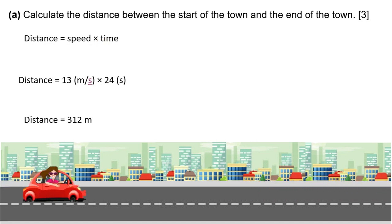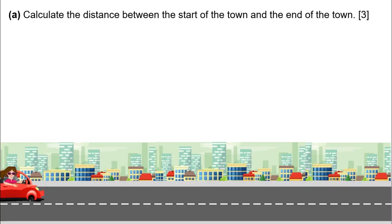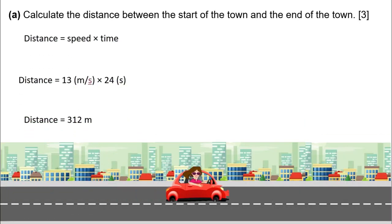As you can see, at point B our car enters into the town and maintained 13 meters per second, and at point C it left the town. Inside the town area, it spent 24 seconds. You know, distance equals speed multiplied by time. So our speed is 13 meters per second and time is 24 seconds.